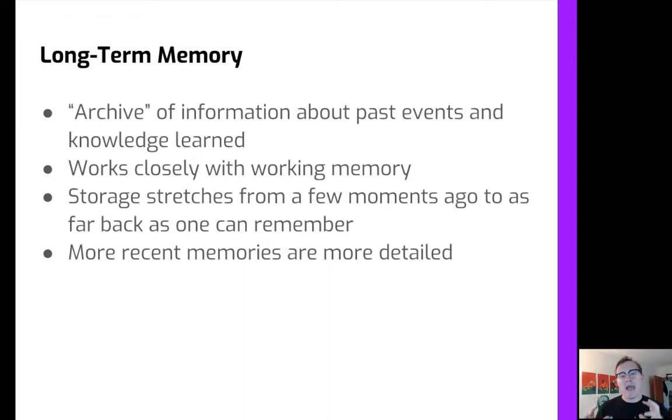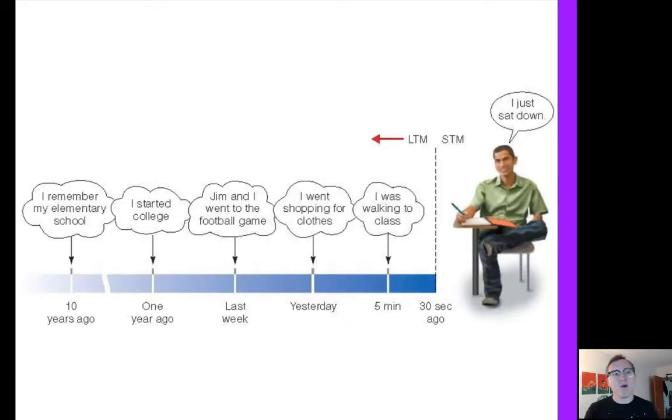Long-term memory also has a certain amount of salience associated with it. Basically, things that happened more recently are more detailed. Oftentimes, we remember things better the closer they've happened to today. So just a graphic to think about how long-term memory works. The area to the right of the dotted line involves short-term memory. So that is 30 seconds ago, things that are happening right now at this very moment. And everything to the left of the dotted line is long-term memory. This is information that could have happened as soon as five minutes ago or as long as 10 years ago.